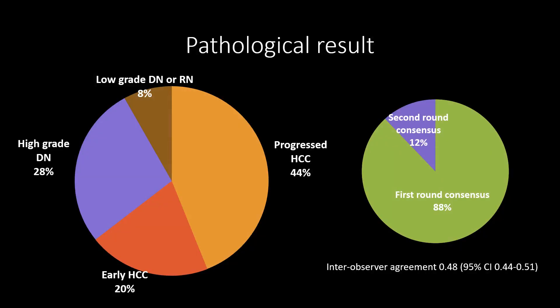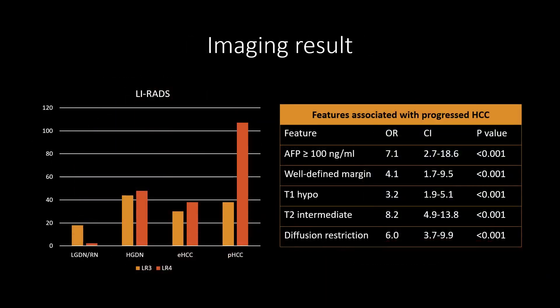In the results, the majority of these nodules are progressed HCC, with a significant portion being early HCC and high-grade dysplastic nodules. This suggests that an HBP hypointense nodule has a lower chance of being a low-grade dysplastic or regenerative nodule. One problem with this review is low agreement among pathologists — about 1 in 10 nodules required a second round of review before a consensus diagnosis. The majority of lesions were graded LR3 and LR4, with progressed HCC more commonly graded as LR4, and low-grade dysplastic nodules more commonly graded as LR3. The distribution was roughly equal for high-grade dysplastic nodules and early HCC.